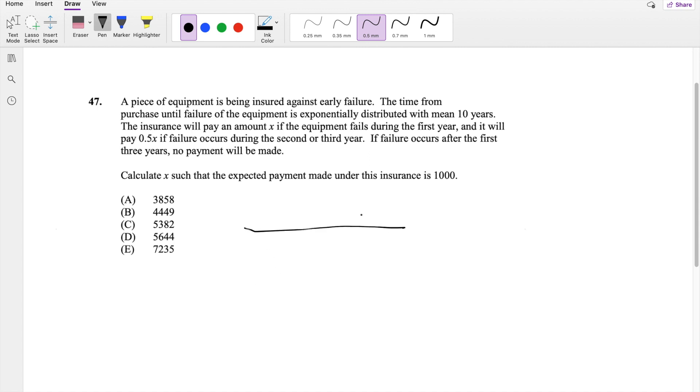So the time from purchase until failure is exponentially distributed, with mean equal to 10. The insurance will pay an amount X if the failure occurs in the first year. And if it fails in the second or third year, they're going to pay half of X.